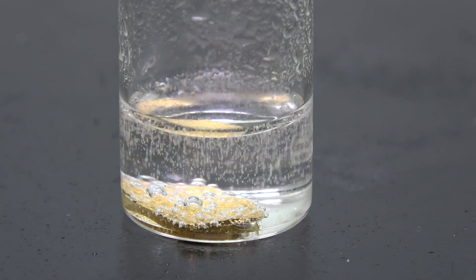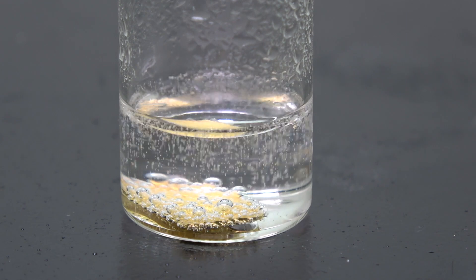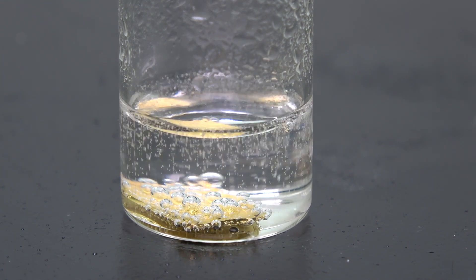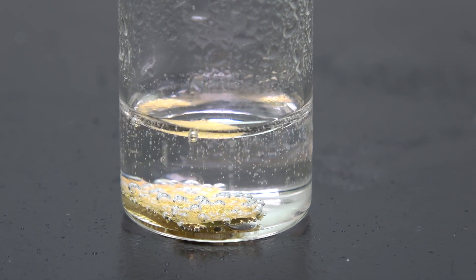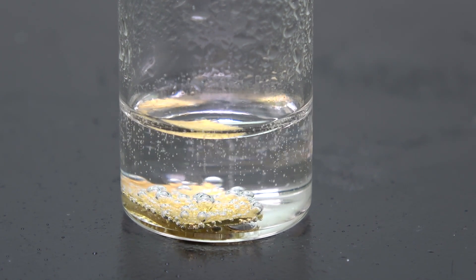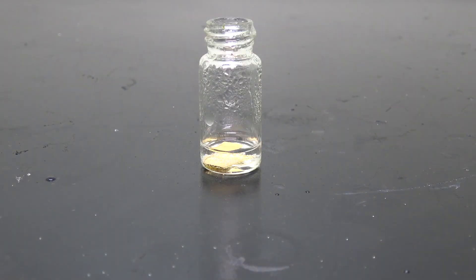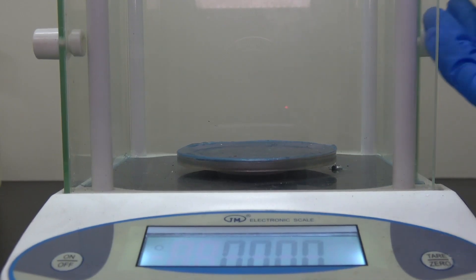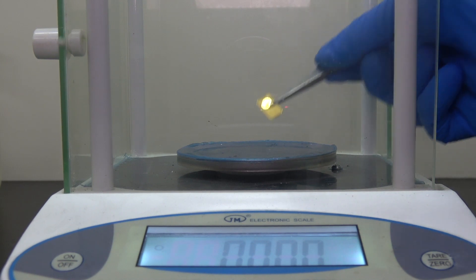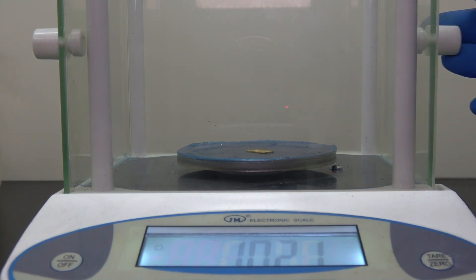This can be an indication of a reaction taking place between the gold and the acid. But again, this can just be oxygen from the decomposition of hydrogen peroxide, and the gold simply acts as a nucleation site. Well, the only way to know for sure is to take it out and put it on the scale. And it appears no mass is lost.